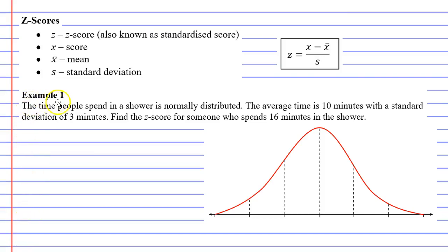In this video we're going to complete example one. It says the time people spend in a shower is normally distributed. It's quite important that it says normally distributed - if data is not normally distributed, then you can't use z-scores.